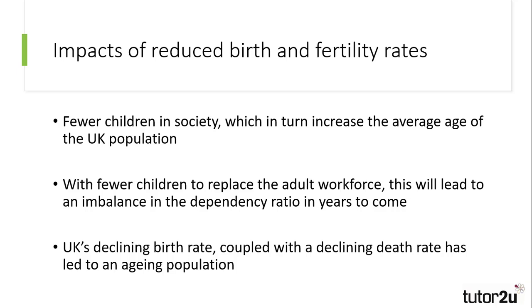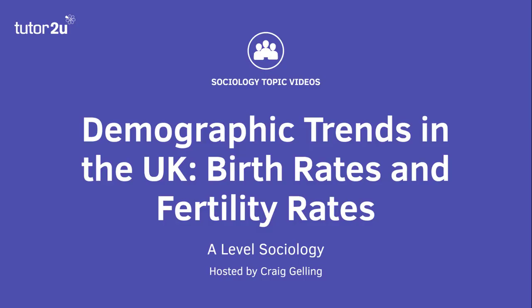The impacts of these changes are that there are less children in society as a proportion of the population. This in turn means the average age of the population will increase, and this is particularly coupled with falling death rates and people living longer. At present, the average age of a UK citizen is 40, which suggests the UK has an ageing population. This could lead to an imbalance in the dependency ratio, as people leave the employment market when they retire, but there aren't enough young people to fill the roles that are left vacant. This also increases the burden on those working to pay for those that aren't, something which may be addressed through increasing the retirement age, or reducing pensions to compensate. That concludes this Tutor2U Sociology topic video on Demographic Trends in the UK, looking at birth and fertility rates.